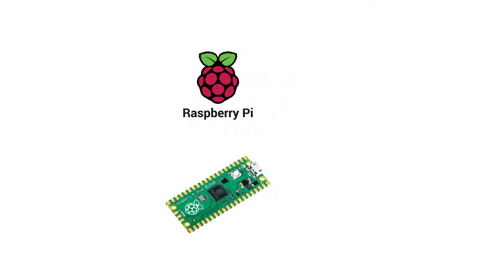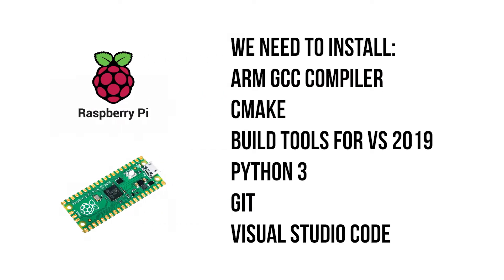We are going to need quite a few things today before we start programming and building projects. We are going to need the ARM GCC compiler, the CMake software and Visual Studio Code extension, the C++ build tools for Visual Studio 2019, Python 3, Git, and finally Visual Studio Code. All the links you need are in the description. We will be using Git to download the Pico SDK and the example projects written by the Raspberry Pi Foundation.